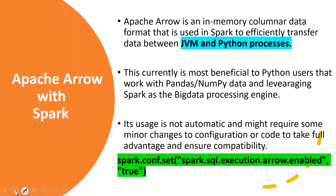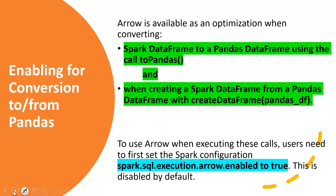Apache Arrow is not enabled by default in Spark. To enable it, you need to set the property `spark.sql.execution.arrow.enabled` to `true`. Once enabled, the Apache Arrow flavor of data conversions between different processes comes into picture. It is available as an optimization when moving data between different processes.